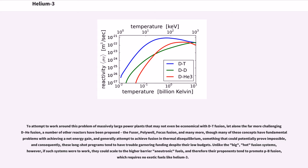Though many of these concepts have fundamental problems with achieving a net energy gain, and generally attempt to achieve fusion in thermal disequilibrium, something that could potentially prove impossible, and consequently, these long-shot programs tend to have trouble garnering funding despite their low budgets. Unlike the big hot fusion systems, however, if such systems were to work, they could scale to the higher barrier aneutronic fuels, and therefore their proponents tend to promote P-B11 fusion, which requires no exotic fuels like helium-3.